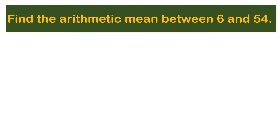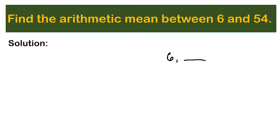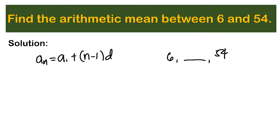Let's have another one: find the arithmetic mean between 6 and 54. So we have 6, the unknown arithmetic mean, and 54 — three terms total. We use the formula a sub n equals a sub 1 plus (n minus 1) times d. The last term is 54, the first term is 6, and since there are three terms, n is 3: so 54 equals 6 plus (3 minus 1) times d.